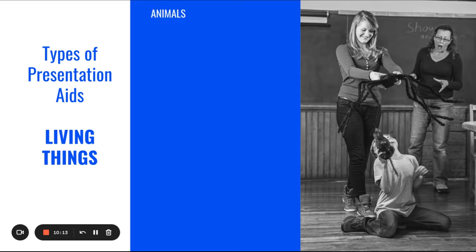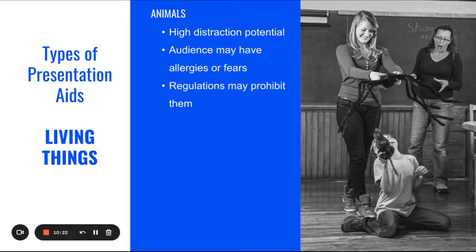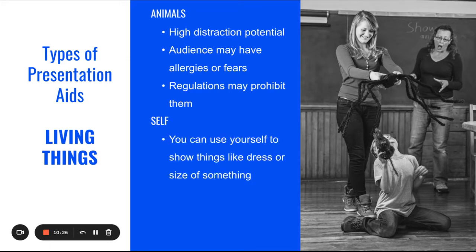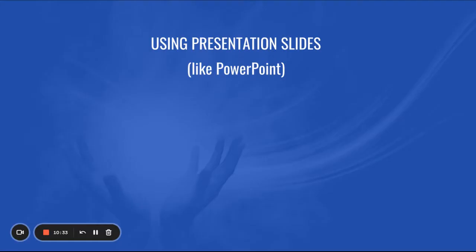Types of presentation aids: living things. Animals. That this can be a problem. We know that they can be distracting. People may have allergies or fears and regulations may prohibit them. Yourself. You can use yourself to show things like dress or size of something. People. Ask ahead of time. Make sure they know what to expect from you.